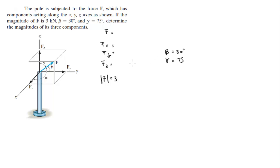So with the magnitude and these angles you can already find these two. So F of z is equal to F cosine of 75. And F of y is equal to F cosine of 30.